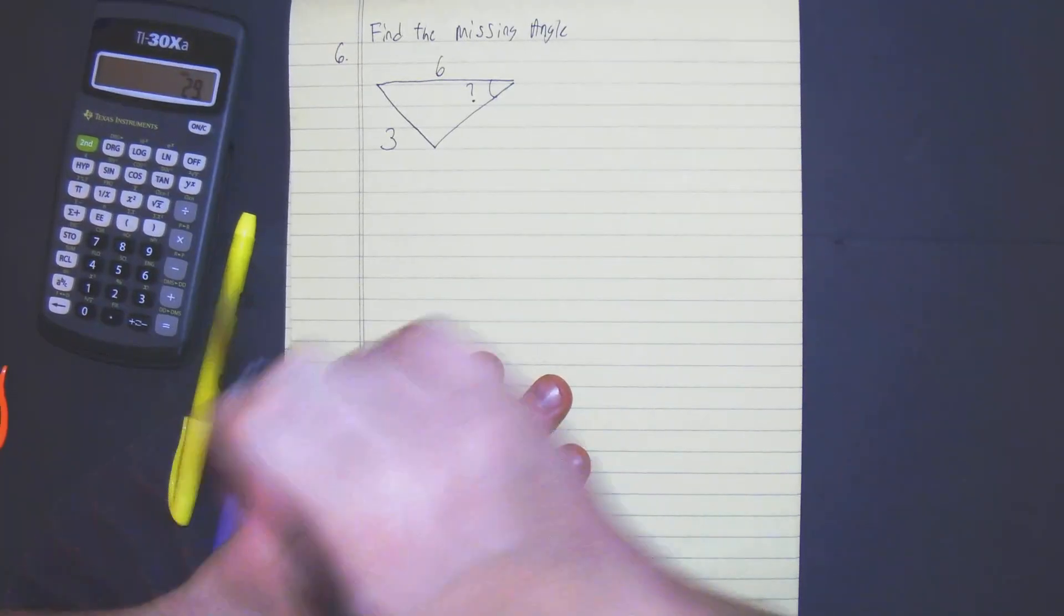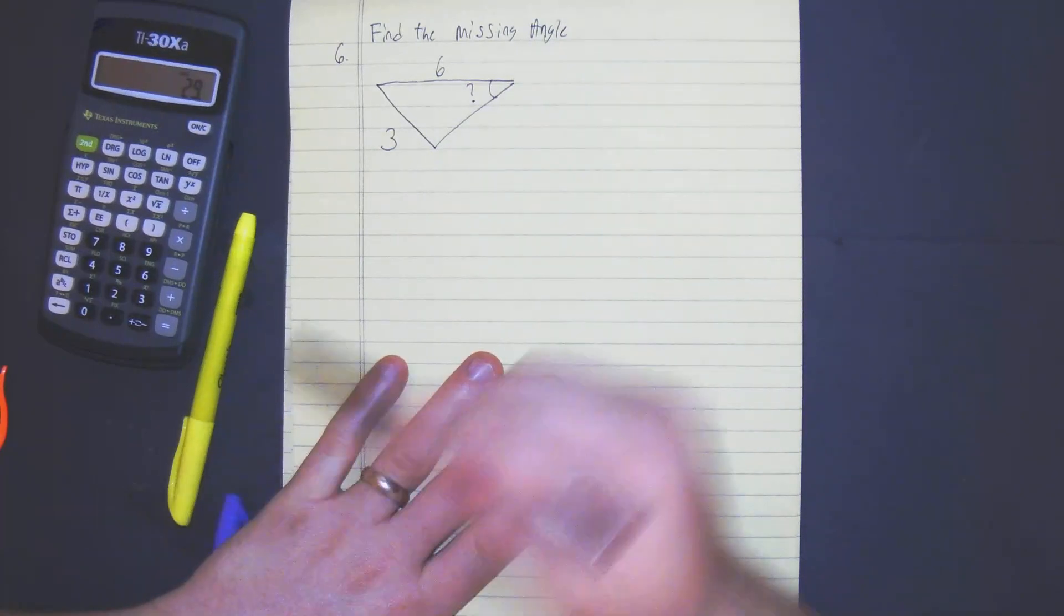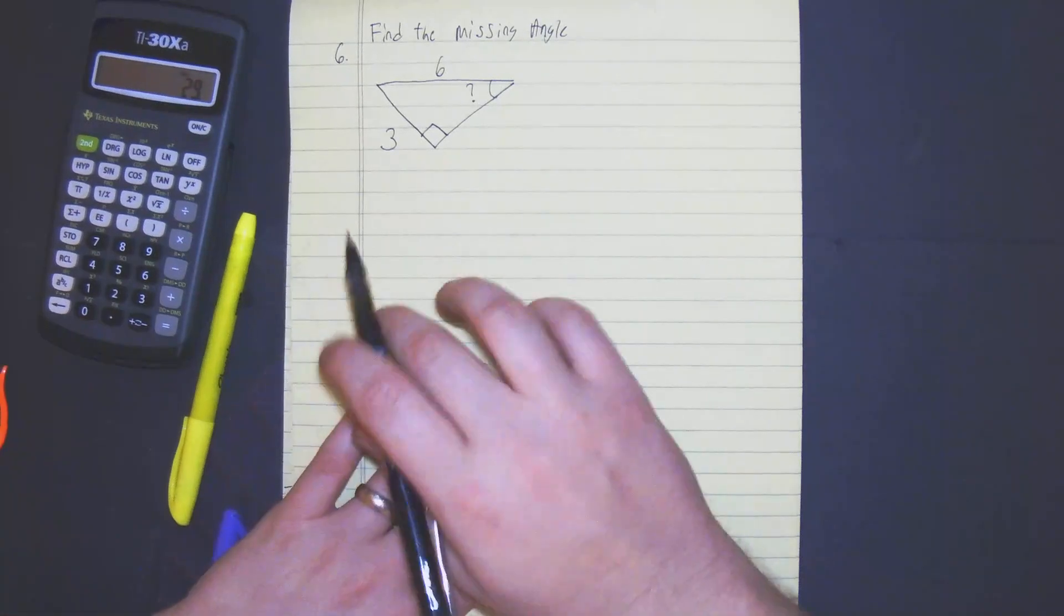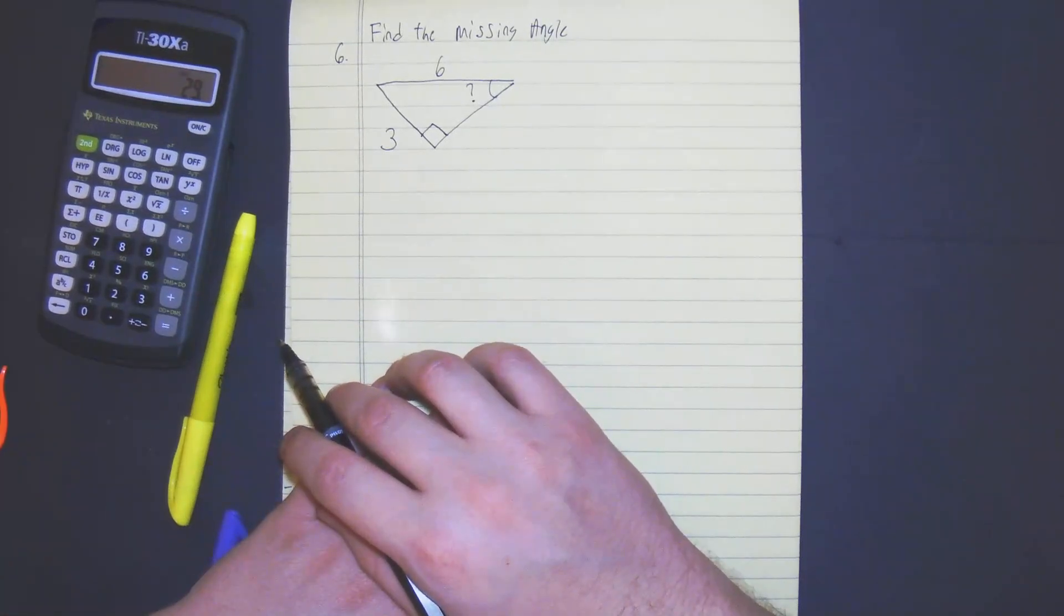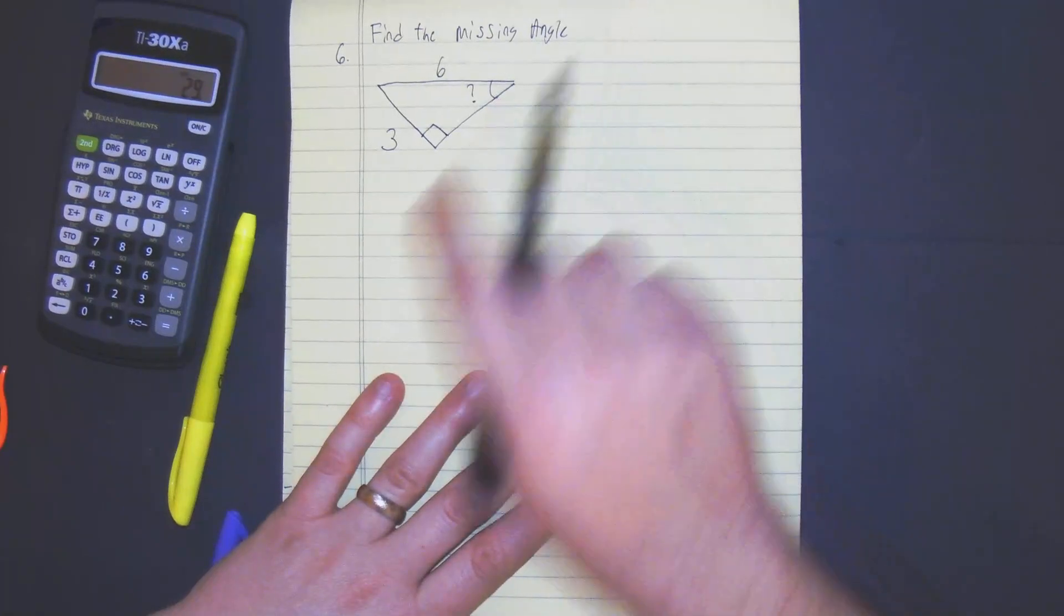Number six says find the missing angle. So we have here a right triangle which is shared at the beginning. We have a right triangle and we need to figure out what trig function we need to use here to find this missing angle.